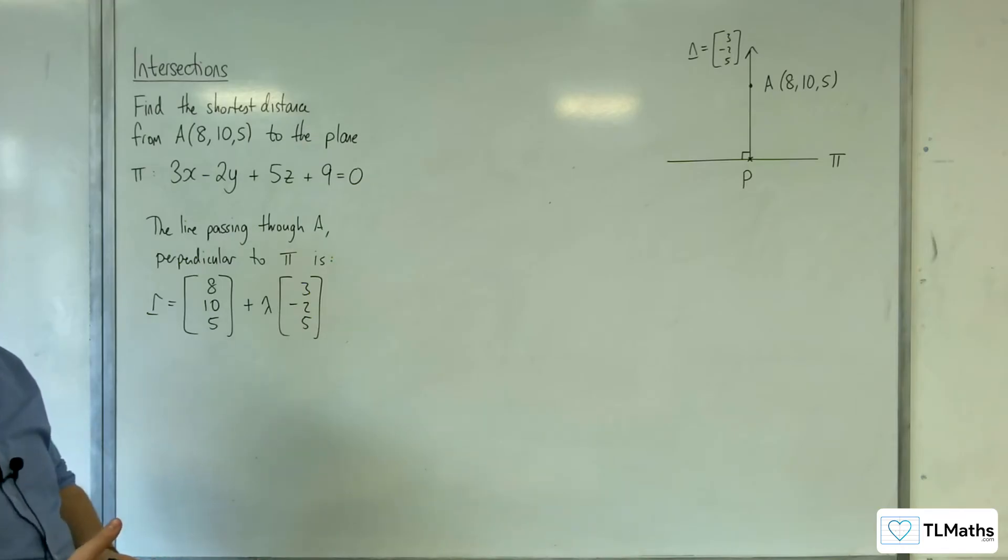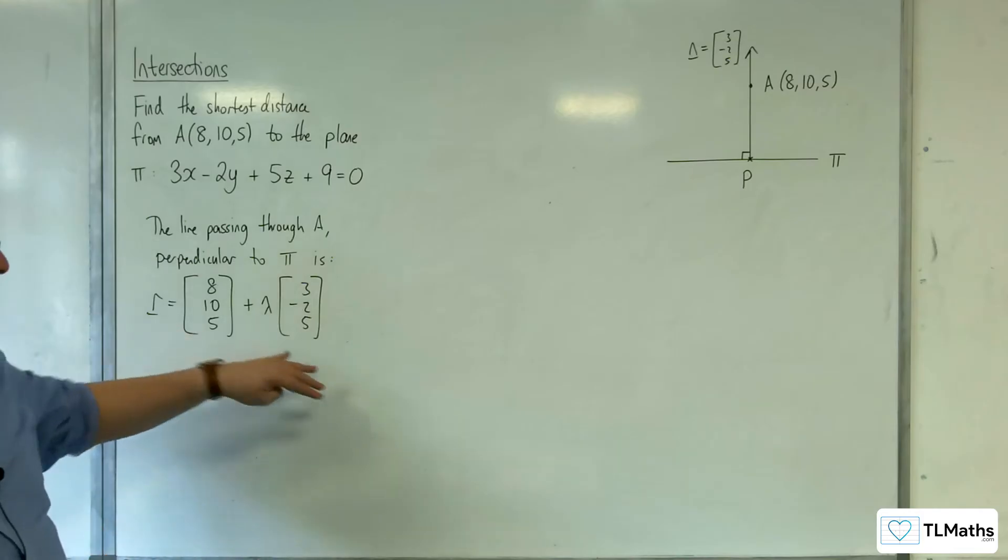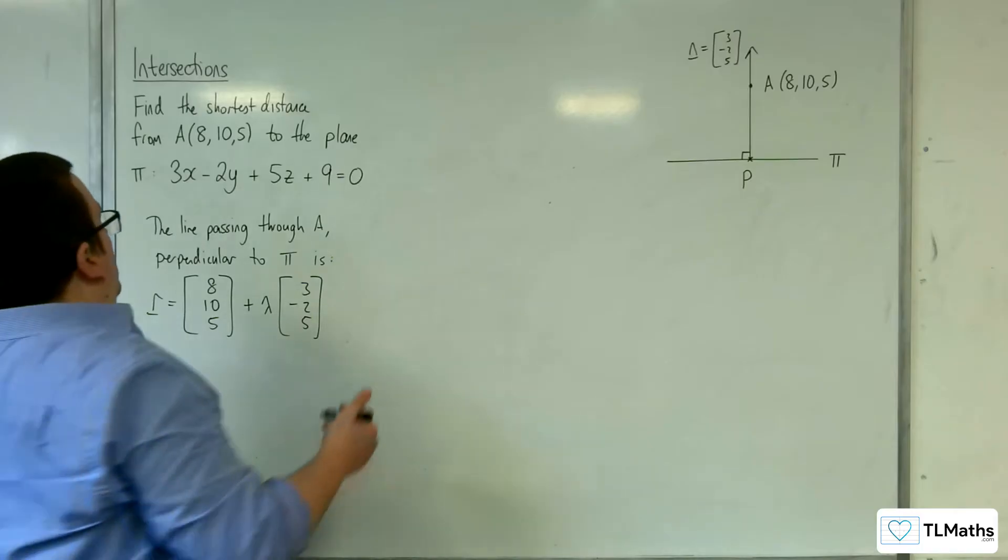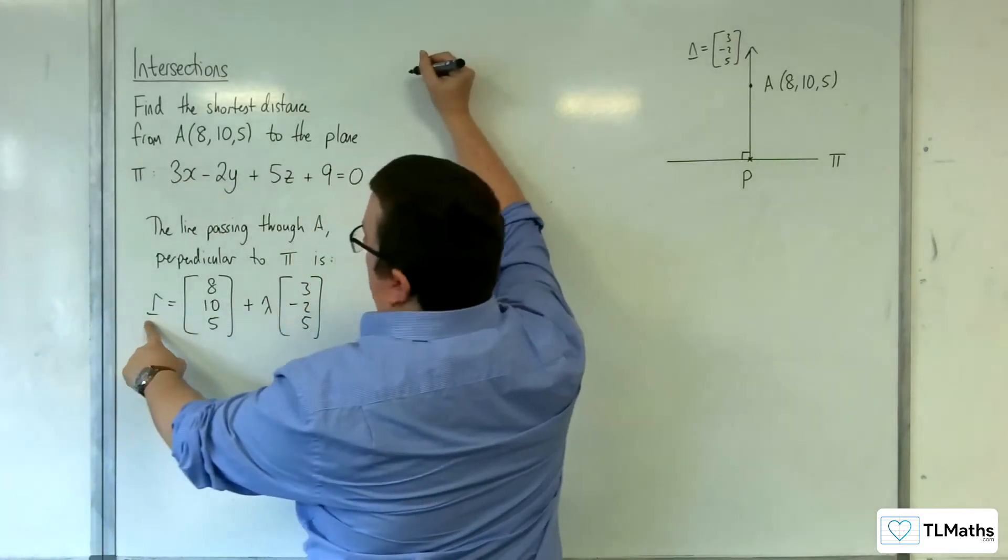So that would be the equation of the line. So I can use that to then find where the line intersects the plane. So remember R is (x, y, z).